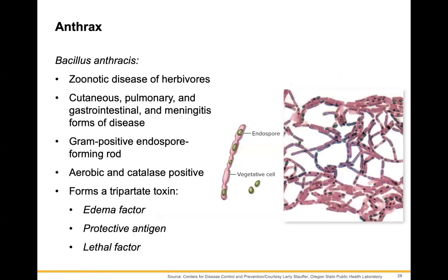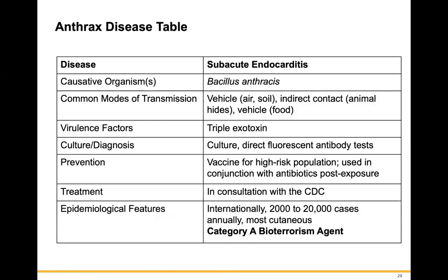Anthrax is caused by Bacillus anthracis, another zoonotic disease. It can be cutaneous, pulmonary, or gastrointestinal, and there is also a meningitis form. It is a gram-positive endospore-forming rod that is aerobic and catalase positive, and it forms a toxin. It was used as a bioterroristic agent in 2001. Internationally, there are about 2,000 to 20,000 cases per year, and it is also considered a potential bioterroristic agent.